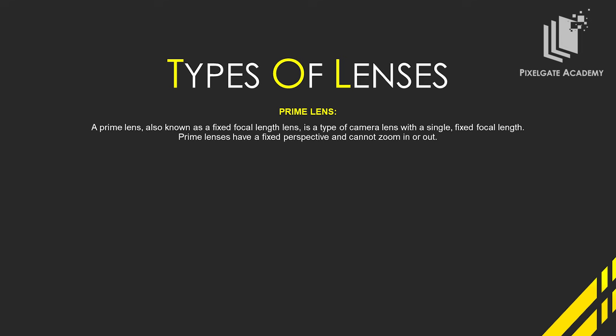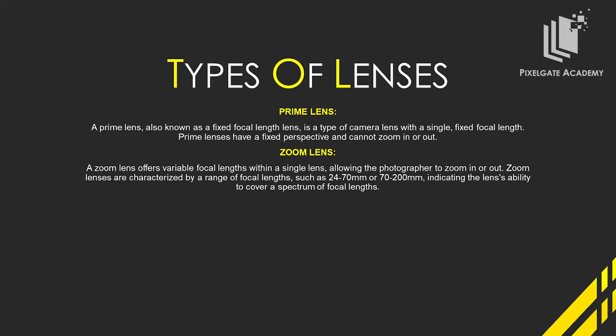Zoom lens. A zoom lens offers variable focal length within a single lens, allowing the photographer to zoom in or zoom out. Zoom lenses are characterized by a range of focal lengths, such as 24-70 or 70-200, for example, indicating the lens's ability to cover a spectrum of focal lengths. They are usually bigger and heavier also.